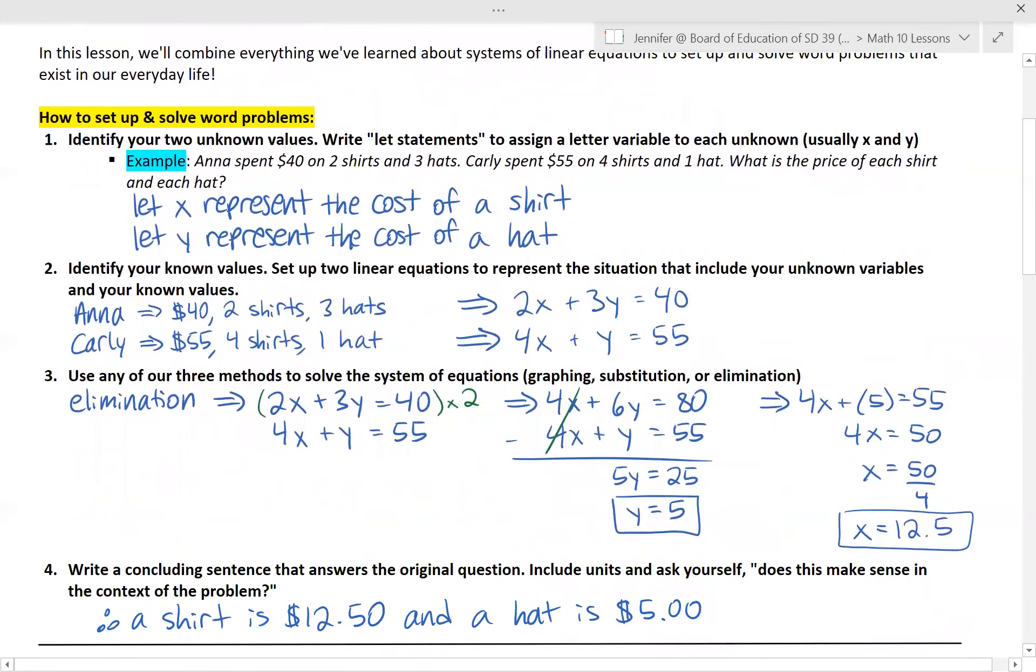The last step is very important for word problems. You can't just leave it at x is this and y is this. You have to apply the context to this problem again. We are wondering what is the price of each shirt and each hat. So we have to write a concluding sentence that answers this question that includes units. So I would say a shirt is $12.50 and a hat is $5 because that's originally what my x and y were assigned to. It's also very important that you ask yourself in this step does this make sense in the context of the problem. If I had got that the hat was $60 and the shirt was $2 that might be a red flag that something's off because you know if you're shopping generally a shirt would probably be more expensive than a hat.